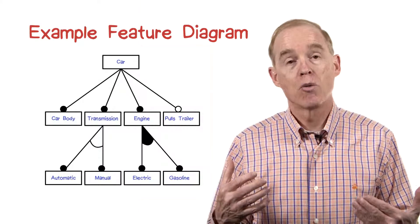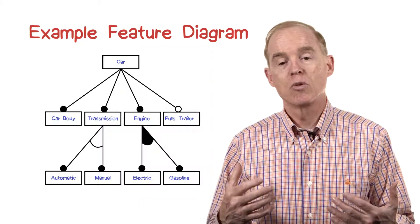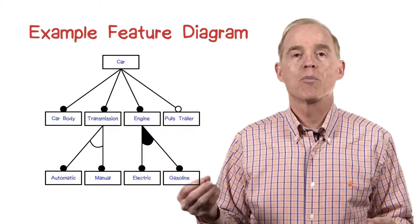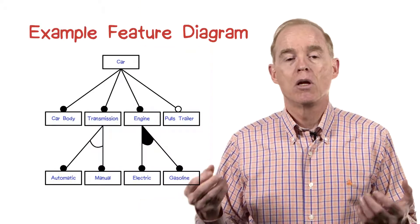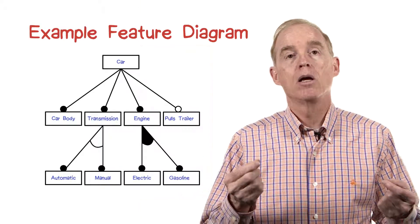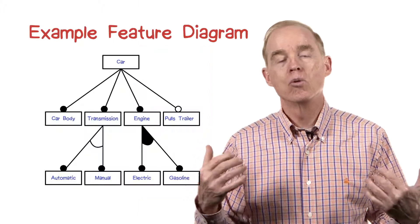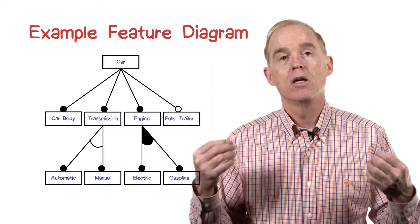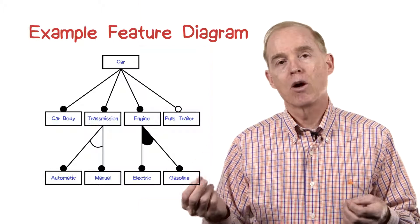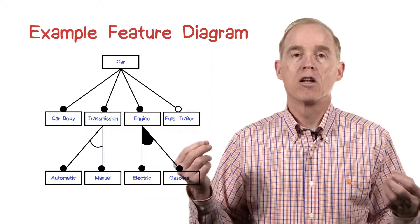Three of the features are required: the body, the transmission and engine, and whether or not it pulls trailer is optional. Whether it's required or optional is indicated by a little circle at the end of the arc connecting car to its features. If the circle is filled in, it's a required feature, and if it's open, then it's an optional feature.